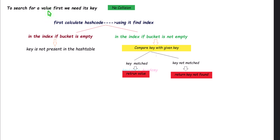With no collision, to search for a value we first need its key. Calculate the hash code to find the index, then go to that index and check whether that slot is empty or not. If the slot is empty, the key is not present in the hash table. If the slot is not empty, compare the key with the given key. If matching is successful, return the value associated with that key. If the match is unsuccessful, return the message 'key is not found.'